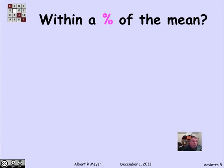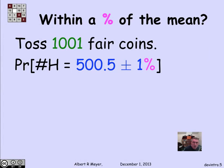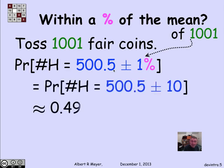But things get better when we start looking at percentages. So what's the probability of being within 1% of the mean if I toss 1,001 coins? Well, 1% of 1,001 is about 10. So we're talking about 1% of the 1,001. And the probability of being within 10 of 500.5, that is to say the probability of being within 510 and 490, is about 0.49.